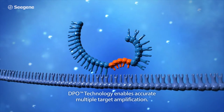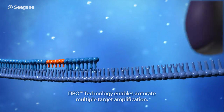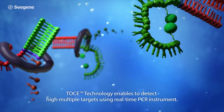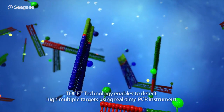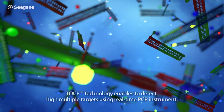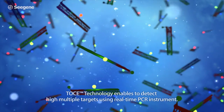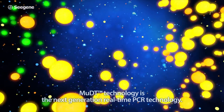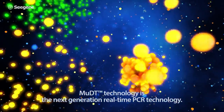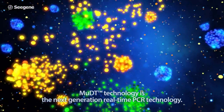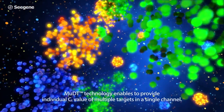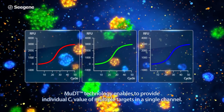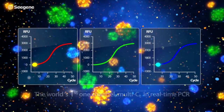Cgene is also the company behind DPO technology, providing superior multiplex PCR, and TOS technology for establishing arbitrary melting temperatures to identify targets. MUDT technology is the next-generation real-time PCR technology. The MUDT algorithm measures fluorescence intensity at multiple temperatures using DPO and TOS technology-enabled assays. This technology combination paves the way for CT measurement of multiple targets in a single channel.